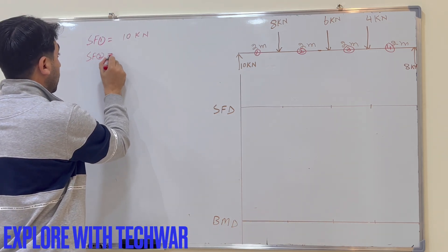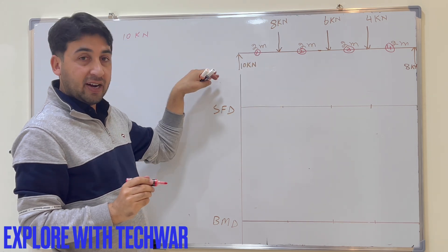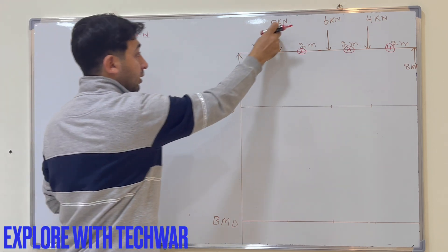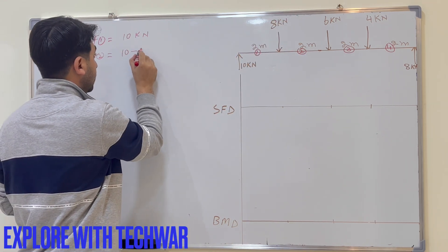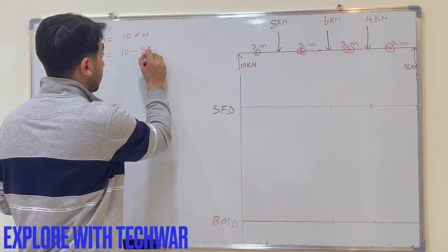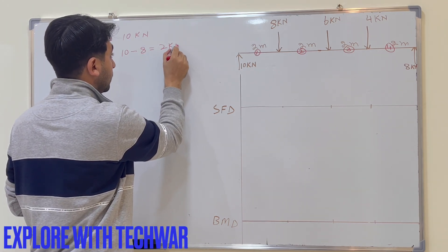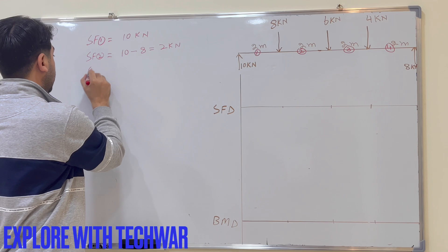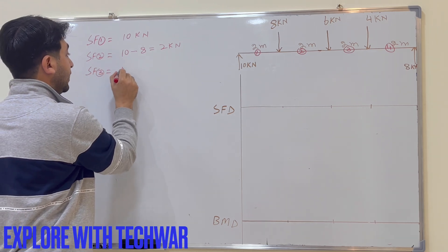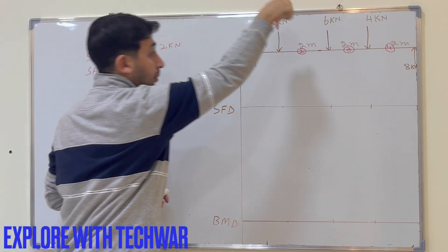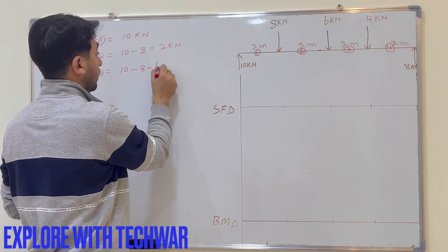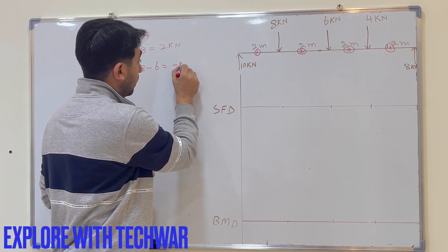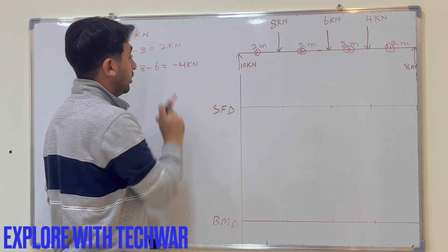Shear force at section two: on the left side we have 10 kN acting upward (positive) and 8 kN acting downward (minus 8), giving 10 minus 8 equals 2 kN. Shear force at section three: 10 minus 8 minus 6 equals minus 4 kN.